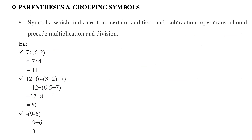Parenthesis and Grouping Symbols. These are symbols which indicate that certain addition and subtraction operations should proceed before multiplication and division. Then we will do the multiplication and division operations, followed by the addition and subtraction operations. Here are the grouping symbols.